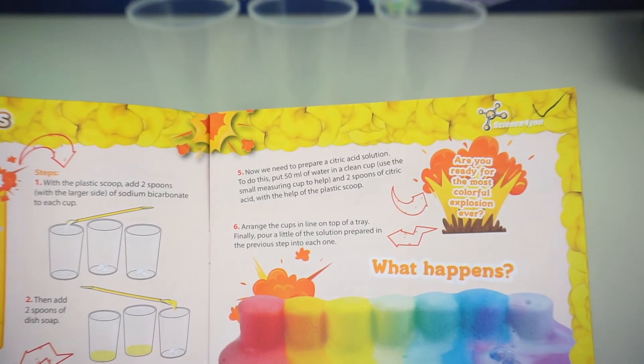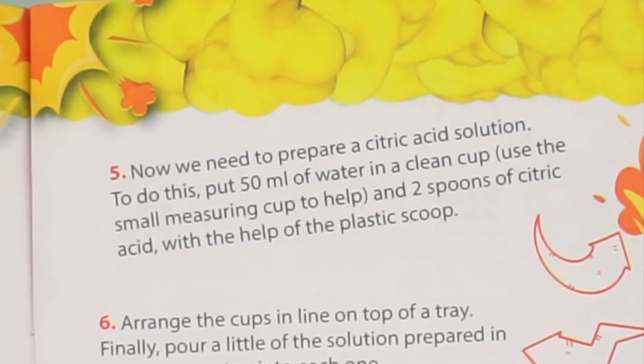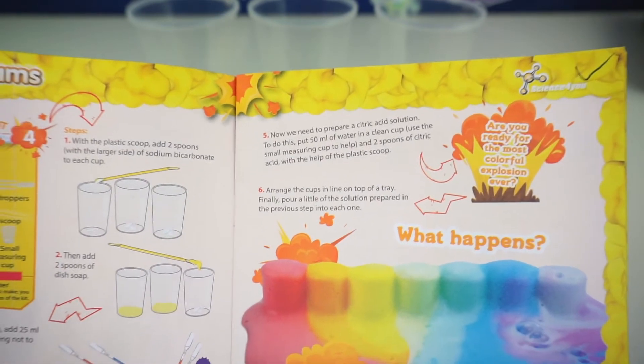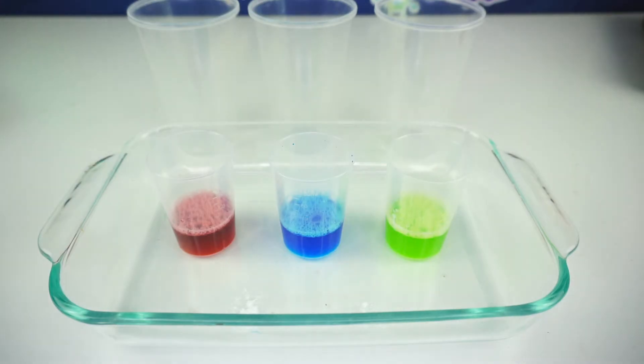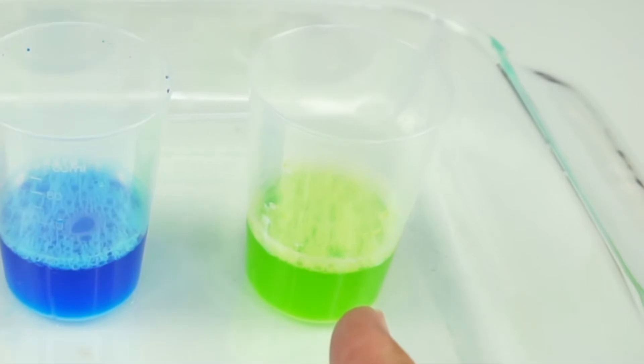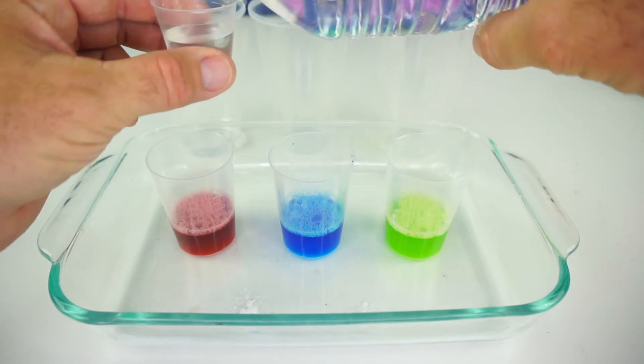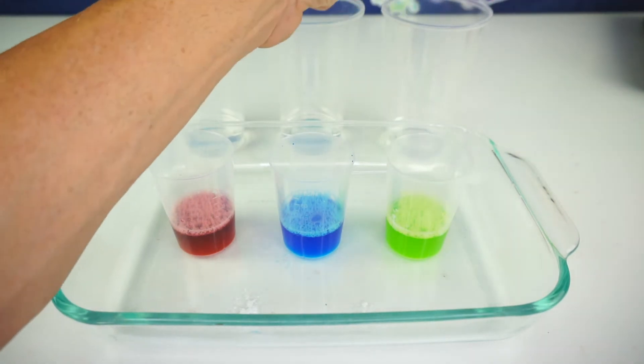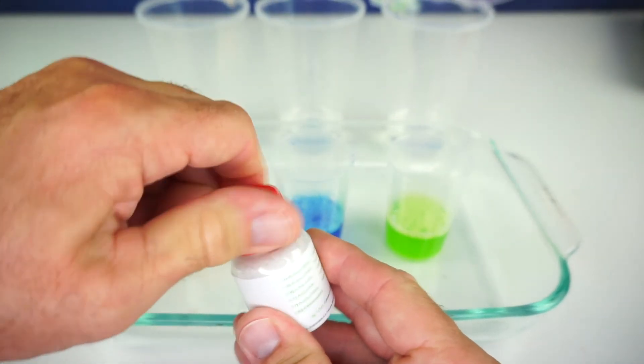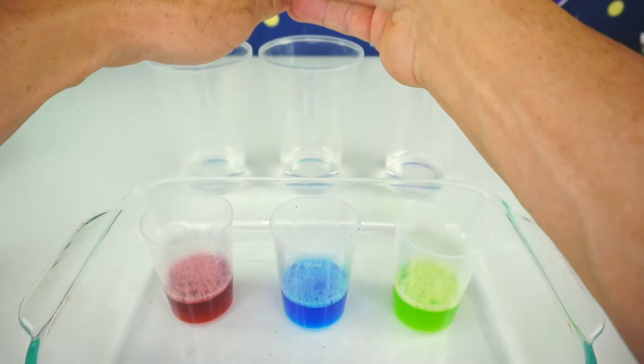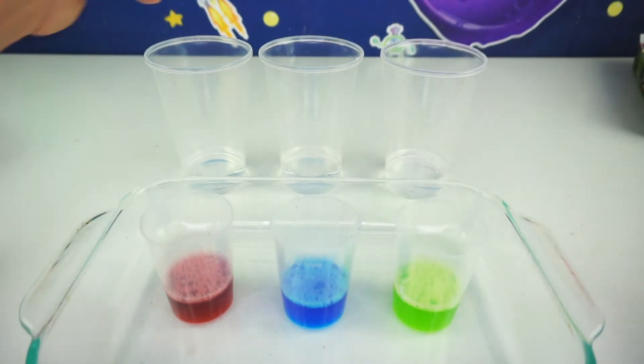Now we need to prepare the citric acid solution. To do this, put 50 milliliters of water in a clean cup. Use the small measuring cup to help. And two spoons of citric acid with the help of the plastic scoop. Alright, let's do that next. I have three cups in the back that I'm going to add with 50 milliliters of water. So that's two of these in each cup with water. Now you notice that this one turned green when I added the yellow. That's because the liquid soap was already blue and made it into green. So we have a lime green color. Now it's time to prepare the citric acid solution. We're going to put two scoops of this in each cup. Let's mix our solution.